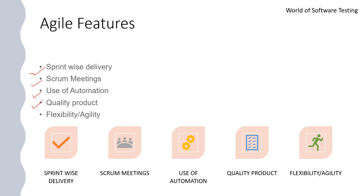The fourth agile feature is a quality product. Testing is integrated throughout the life cycle, enabling regular inspection of the working product as it develops. We definitely get a quality product since testing is involved regularly. Every two weeks we run all automated suites as well as manual tests during the sprint.